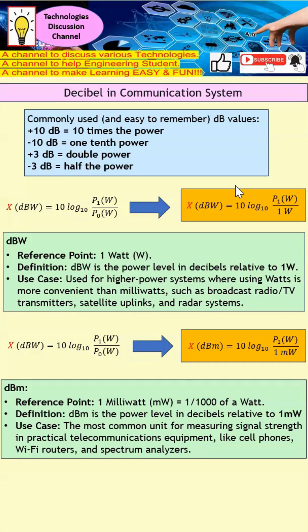Now let's look at the key difference between dBW and dBm. For dBW, the reference number is 1 watt. When the measured power P1 is greater than 1 watt, the dB value is positive. When P1 is less than 1 watt, the dB value is negative. When P1 is exactly 1 watt, this will be zero dB.